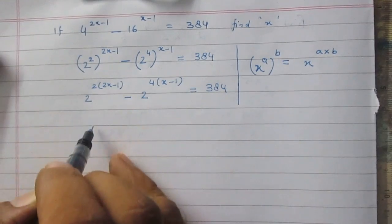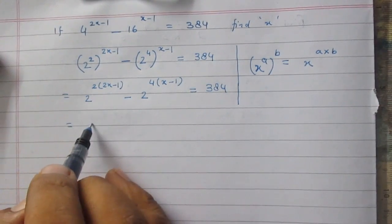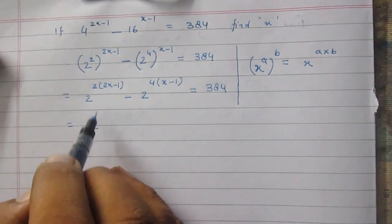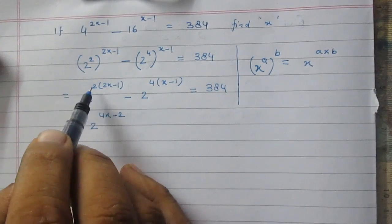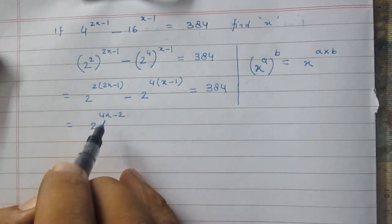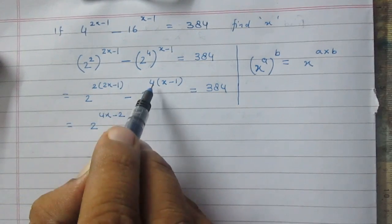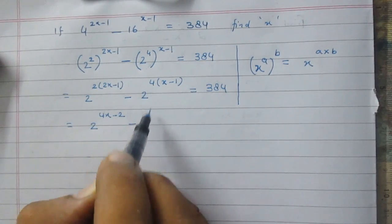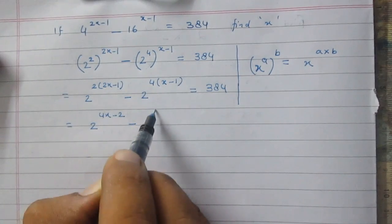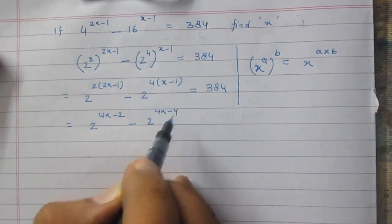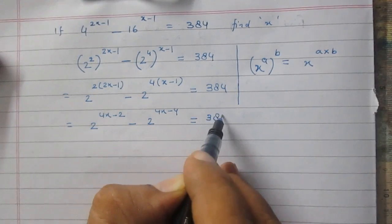Now we can simplify: this term becomes 2 raised to the power 4x minus 2, since twice of (2x minus 1) is 4x minus 2. Then negative sign, and 4 multiplied by (x minus 1) is 4x minus 4. So it is 2 raised to the power 4x minus 2, minus 2 raised to the power 4x minus 4, equal to 384.